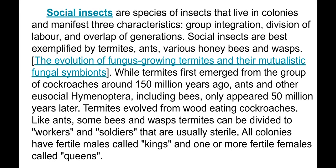Social insects are species of insects that live in colonies and manifest three characteristics: group integration, division of labor, and overlap of generations. Social insects are best exemplified by termites, ants, various honeybees, and wasps.